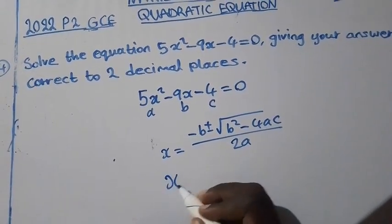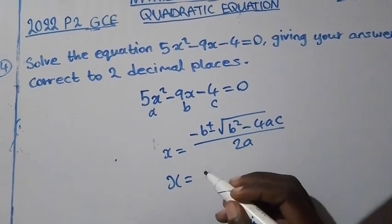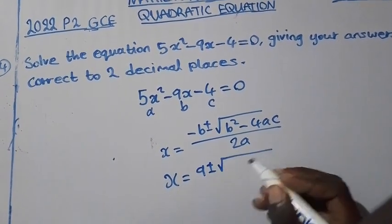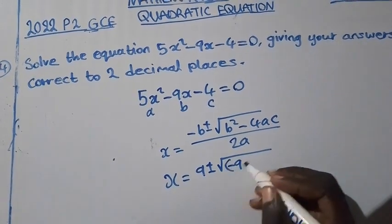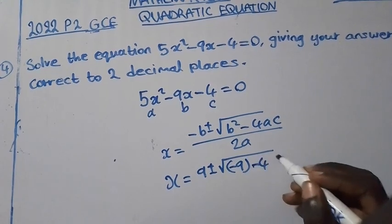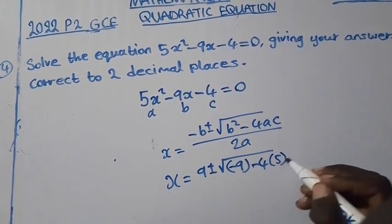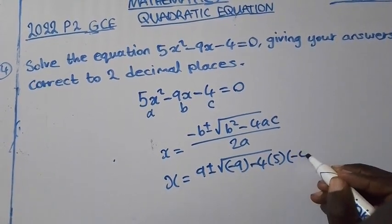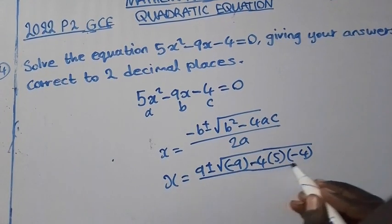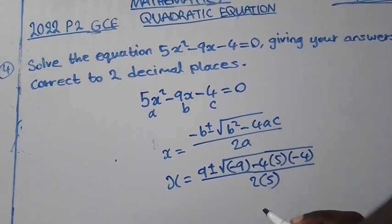So x equal to negative times negative 9, B positive, so we shall have 9, positive or negative. Where there is B we replace negative 9. Minus 4 is part of the formula. Where there is A we replace 5. Where there is C we replace negative 4. Over 2A. Now A is 5.